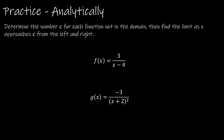Just as we did before, it's important that we understand how to reason through this analytically. I don't want to make a table because it's time-consuming, and I don't want to just rely on a graph. Here it says: determine the number c for each function not in the domain. So for f of x, we're going to find the limit as x approaches some c value that's not in the domain. Because it's a rational function, we're worried about when the denominator equals 0. So we need x minus 4 to not equal 0, meaning x can't be positive 4. So we're going to find the limit as x approaches 4 from the left, and then from the right.